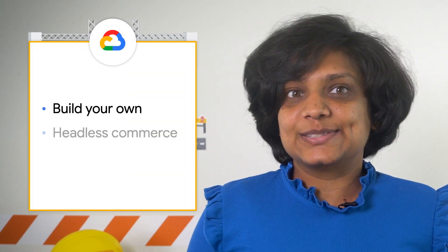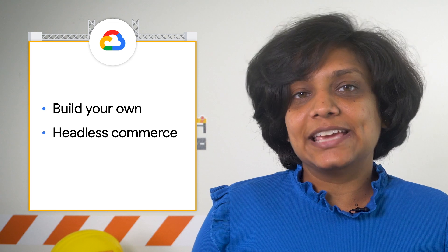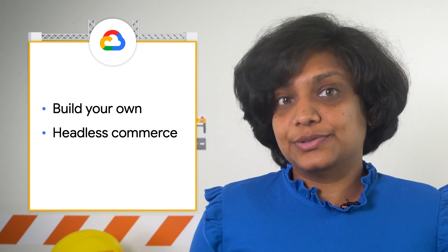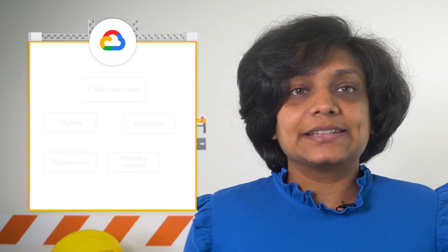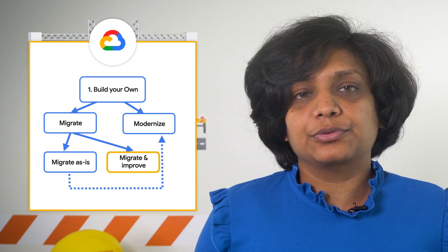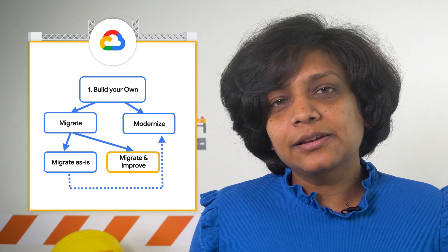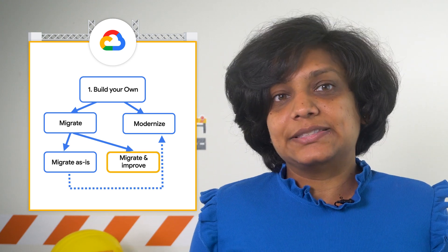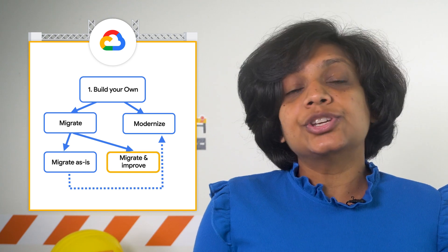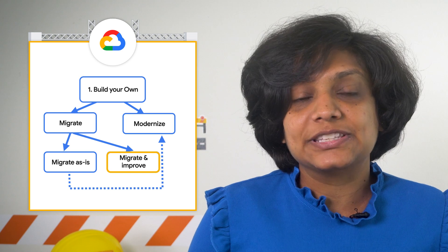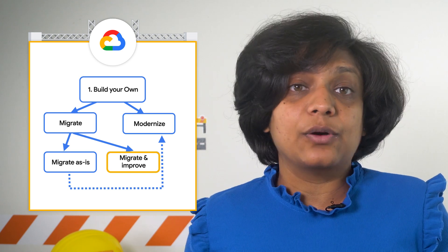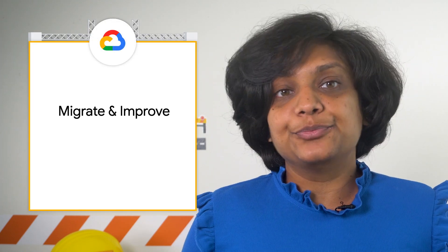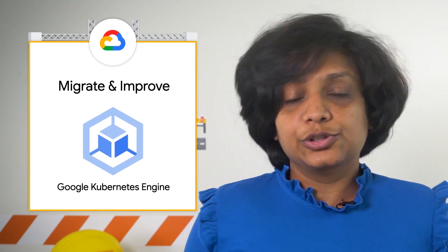Let's dive into the first two approaches — build your own and headless commerce — one by one to understand what it takes to build and which one makes sense for your use case. Now let's architect the build-your-own migrate-and-improve approach. This means you're not just migrating but also looking to break down a legacy monolith commerce application into a set of microservices that can help you gain agility in launching new features, innovate, and improve customer experience by leveraging data insights powered by AI and ML capabilities. You'll migrate and improve using containerization integration on Google Kubernetes Engine.